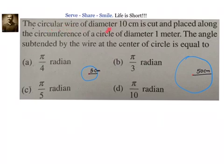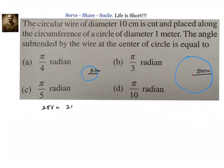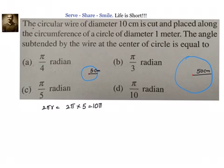The circular wire of diameter 10 centimeters is cut, meaning its total length is placed along the circumference of the bigger circle. First, let us find the circumference of the small wire: 2π into r, that is 2 × π × 5 = 10π, which is approximately 31.4 centimeters. We take that length and place it on the big circle, starting from one point and going along to another.